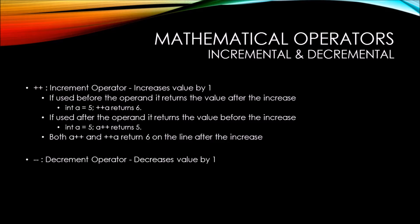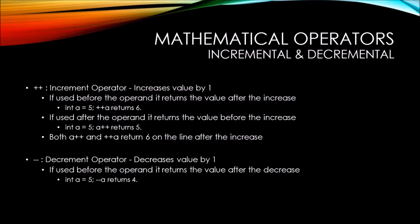The decrement operator decreases the value by 1, and it's simply two subtraction operators together. Much like the incremental operator, if the decrement operator is used before the operand, it returns the value after the decrease. So if int a equals 5, then --a returns 4.